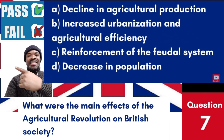Question 7: What were the main effects of the agricultural revolution on British society? a. Decline in agricultural production. b. Increased urbanization and agricultural efficiency. c. Reinforcement of the feudal system. Answer: b. Increased urbanization and agricultural efficiency. The agricultural revolution led to increased agricultural efficiency and contributed to urbanization in Britain.